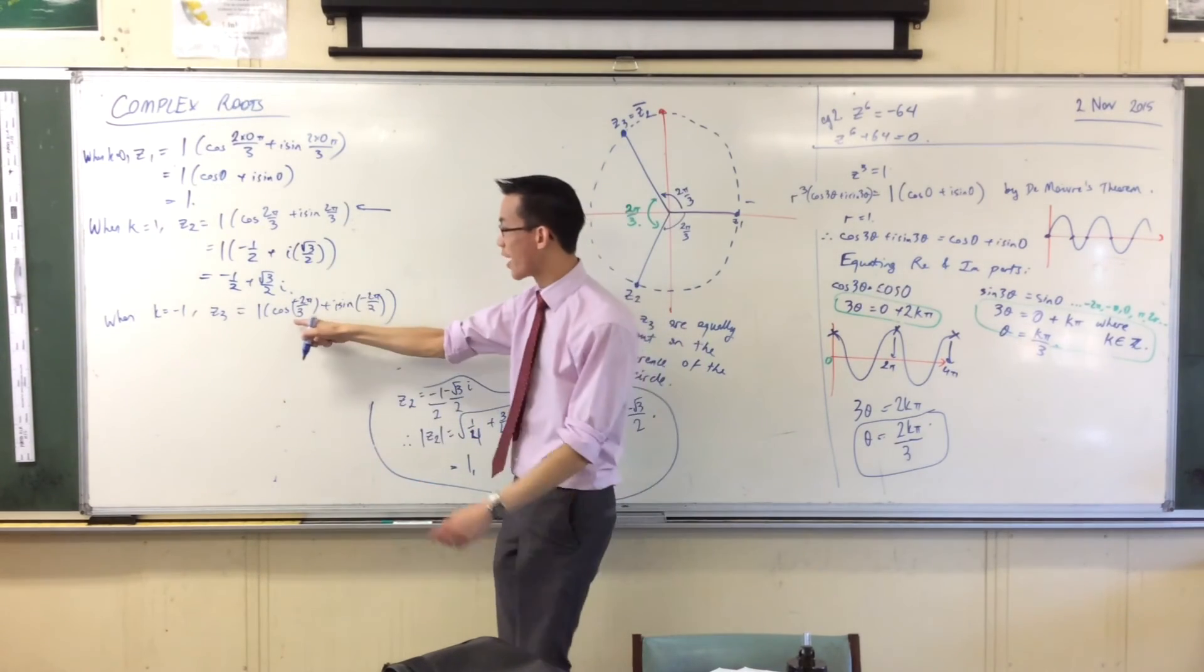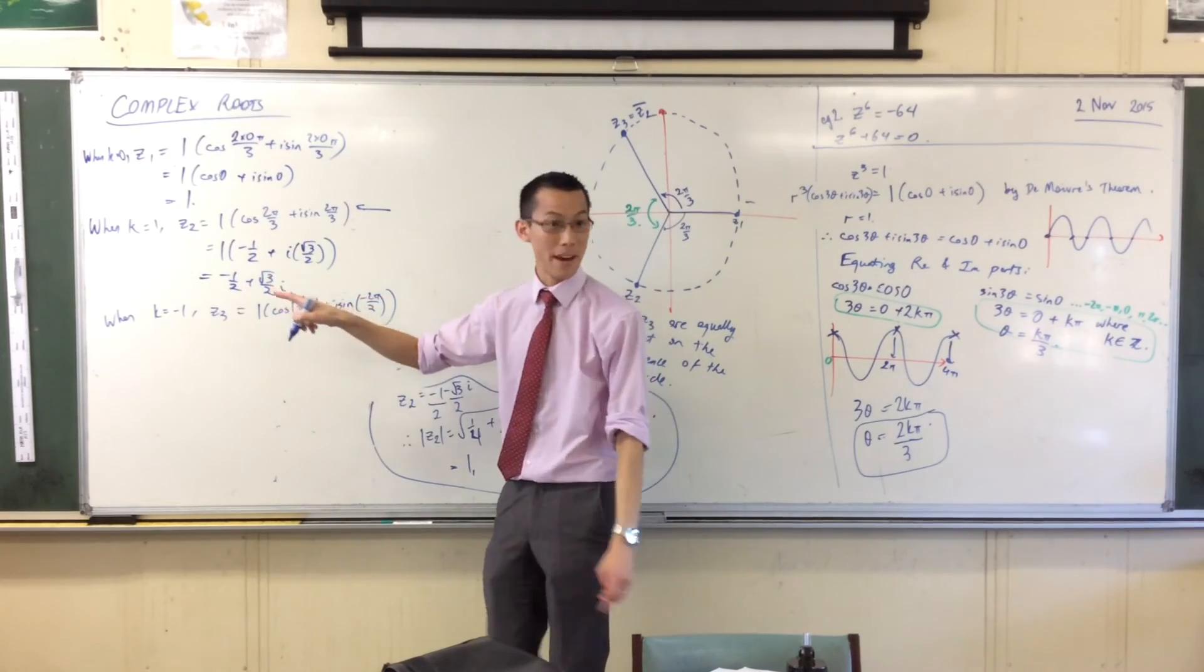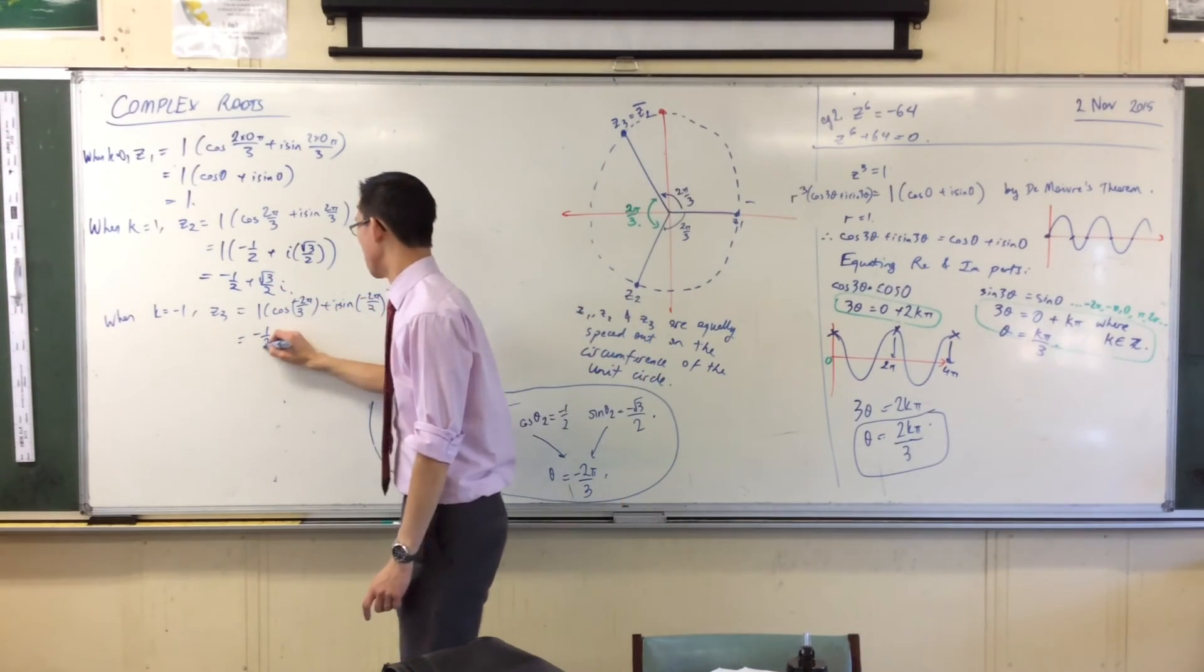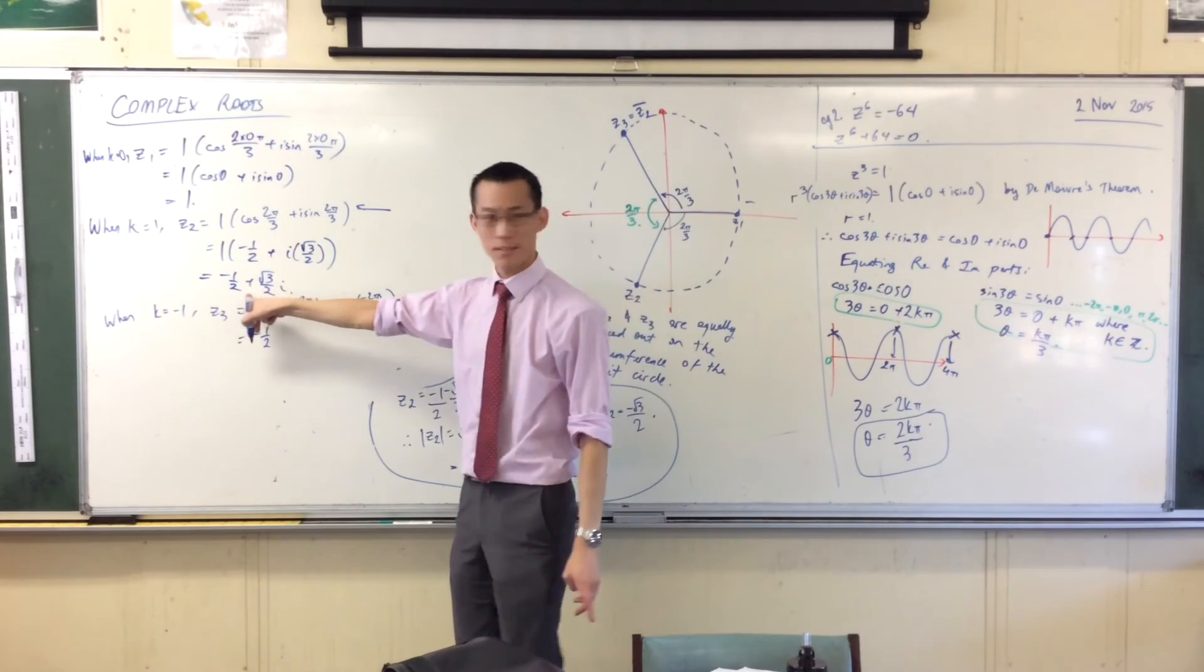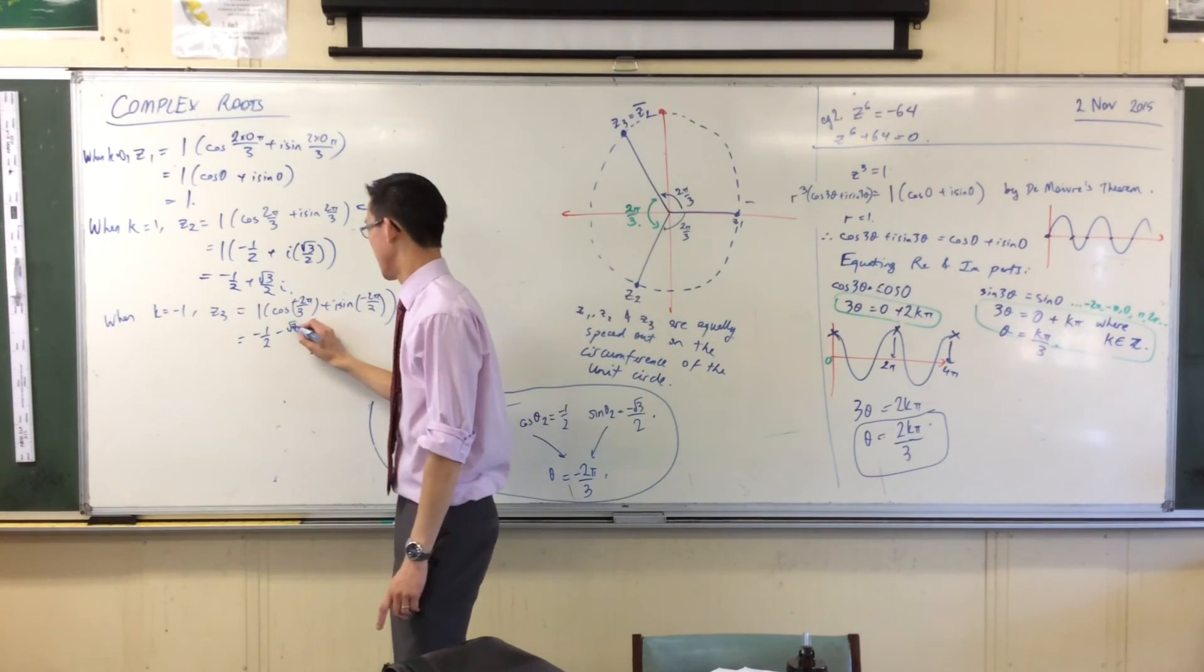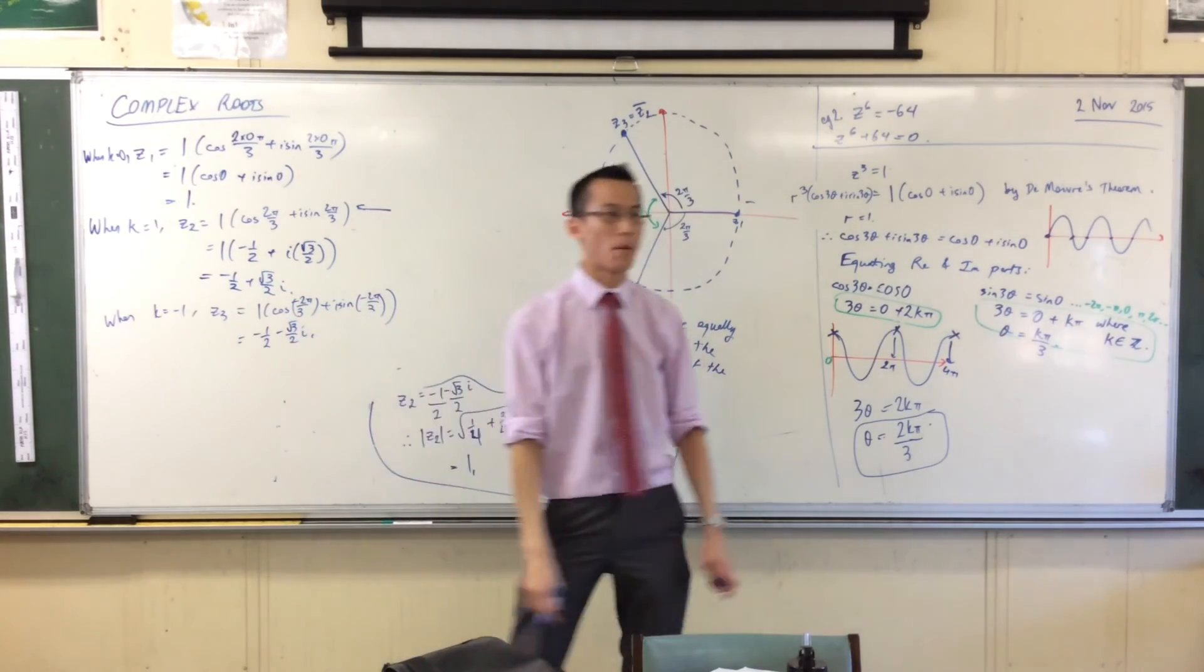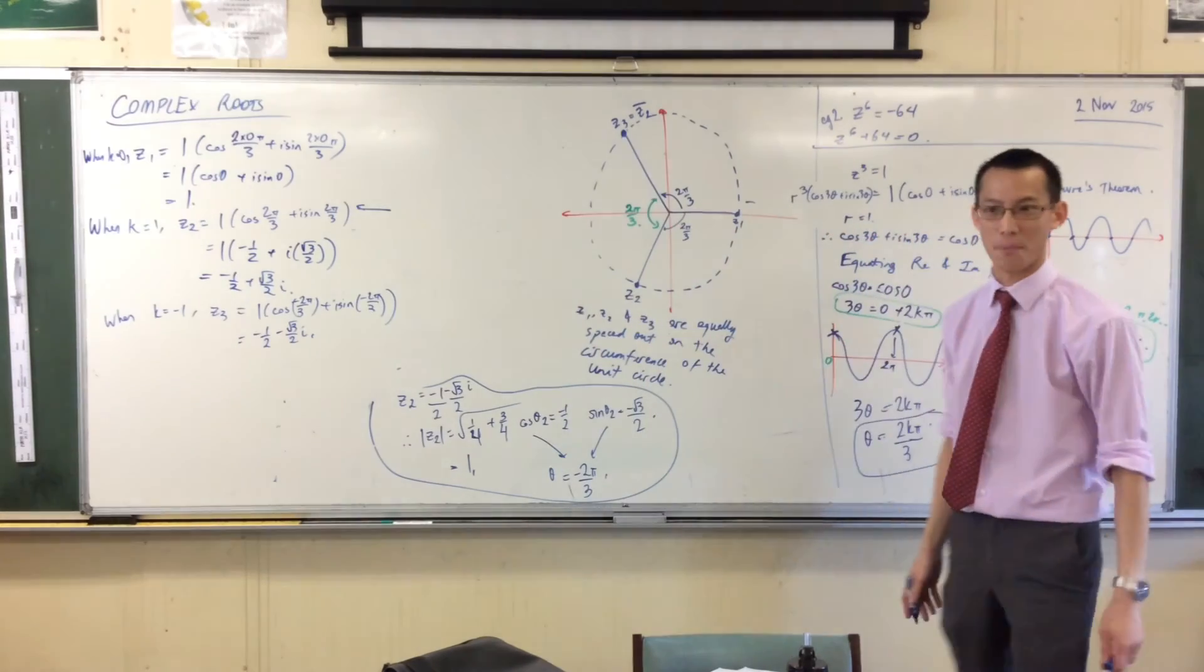Now because cosine is an even function, you're still going to get minus a half. And because sine is an odd function, you're going to get the opposite of this. Which were the three answers that you got before.